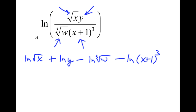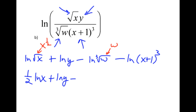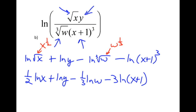Any exponents now need to come to the front. Don't forget that the square root of x is the same as x to the half power, so that half as an exponent comes to the front — giving 1/2 ln of x, plus the ln of y, minus. And since the square root is a half power, the cube root is the 1/3 power, so it becomes minus 1/3 ln of w, minus 3 times the ln of the quantity x plus 1. Notice you need the parentheses for that argument to include x plus 1. And that's how we expand a single log into multiple logs.